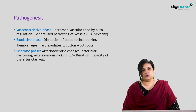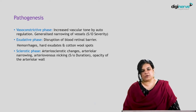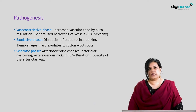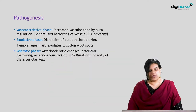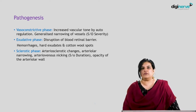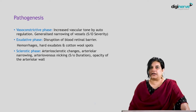If the disease continues to progress — that is, if it is uncontrolled by antihypertensive medication — it results in an exudative phase in which there is disruption of the blood-retinal barrier, and the patient can have hemorrhages, hard exudates, or cotton wool spots. Subsequently it progresses to the sclerotic phase with arteriosclerotic changes: arteriolar narrowing and arteriovenous nicking. This is suggestive of the duration of hypertension, and eventually the patient will develop opacity of the arteriolar wall.